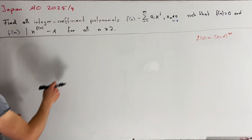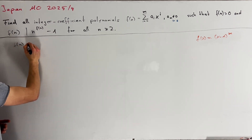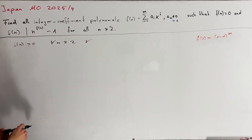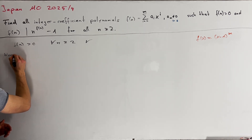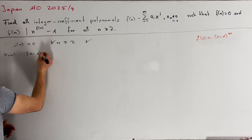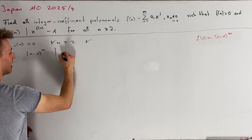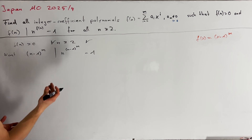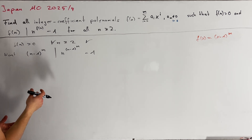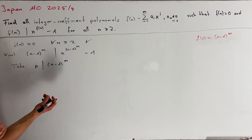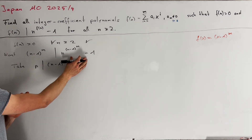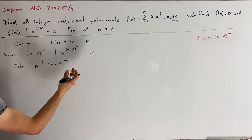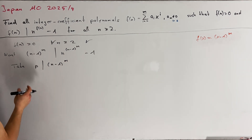We want to check our two conditions on f. First, it's clear that f(n) = (n-1)^m is greater than 0 for all n greater than or equal to 2, so this condition is immediate. For the second condition, we want to check that f(n) = (n-1)^m divides n to the power of (n-1)^m minus 1. We take a prime p dividing the left-hand side and examine how many times p divides both sides. Since p divides (n-1)^m, p also divides n minus 1, so we can apply the LTE lemma, requiring a case distinction on whether p equals 2 or not.